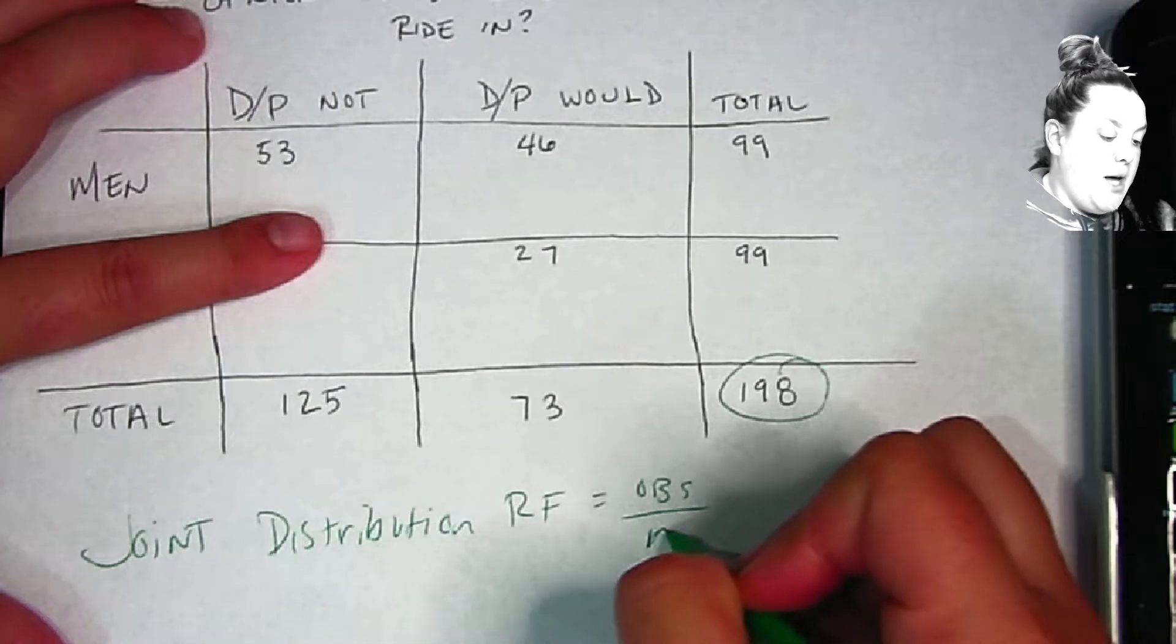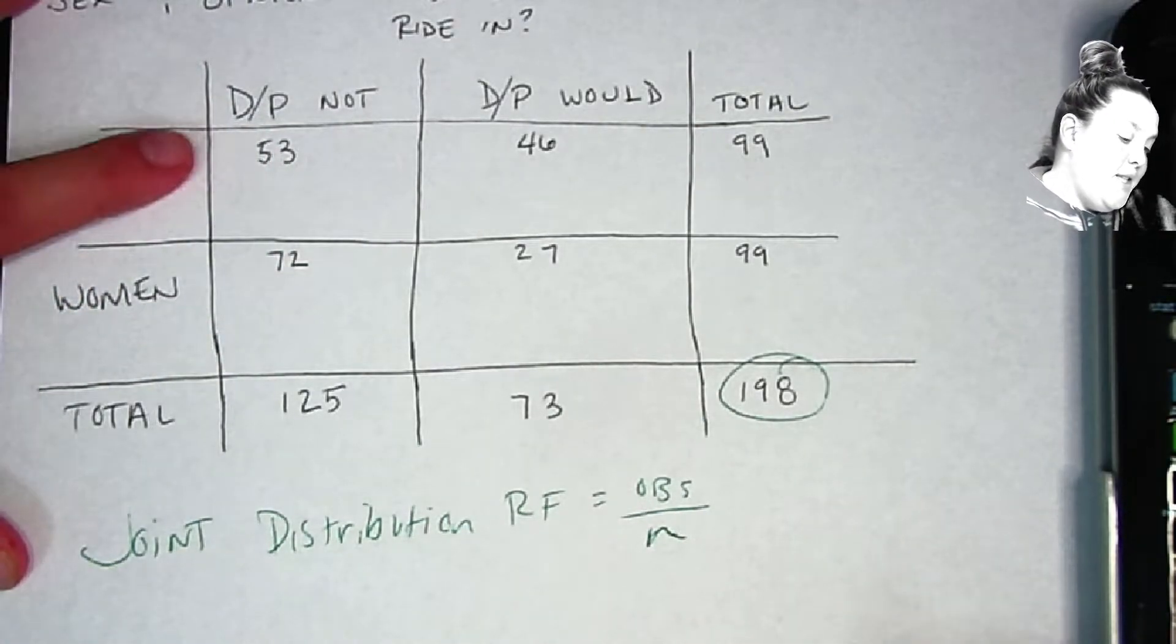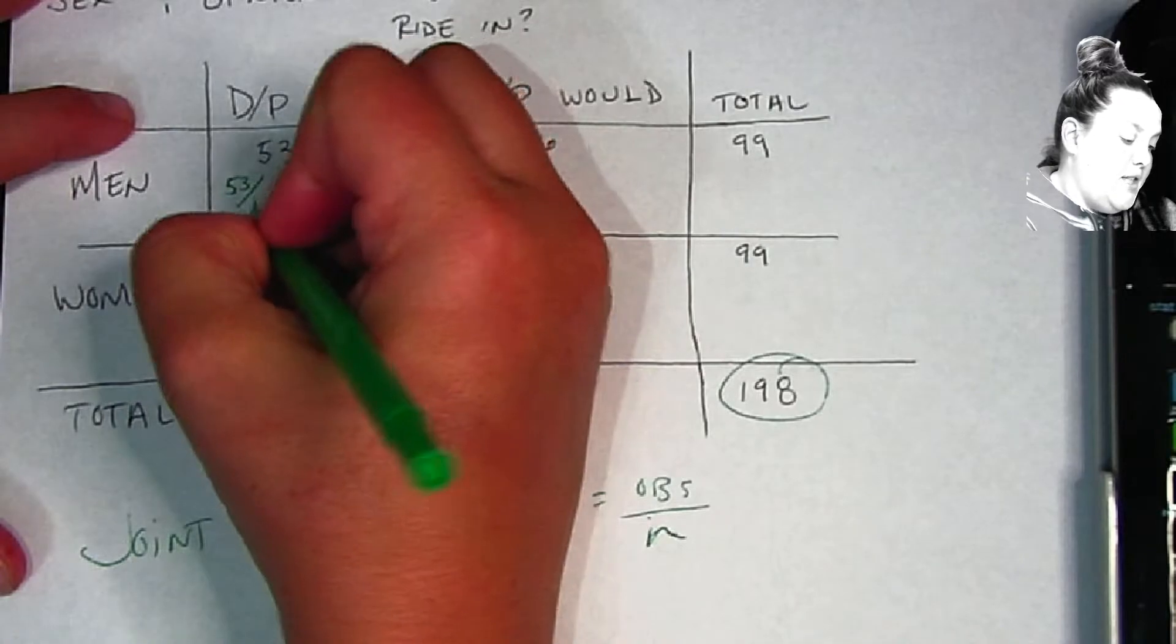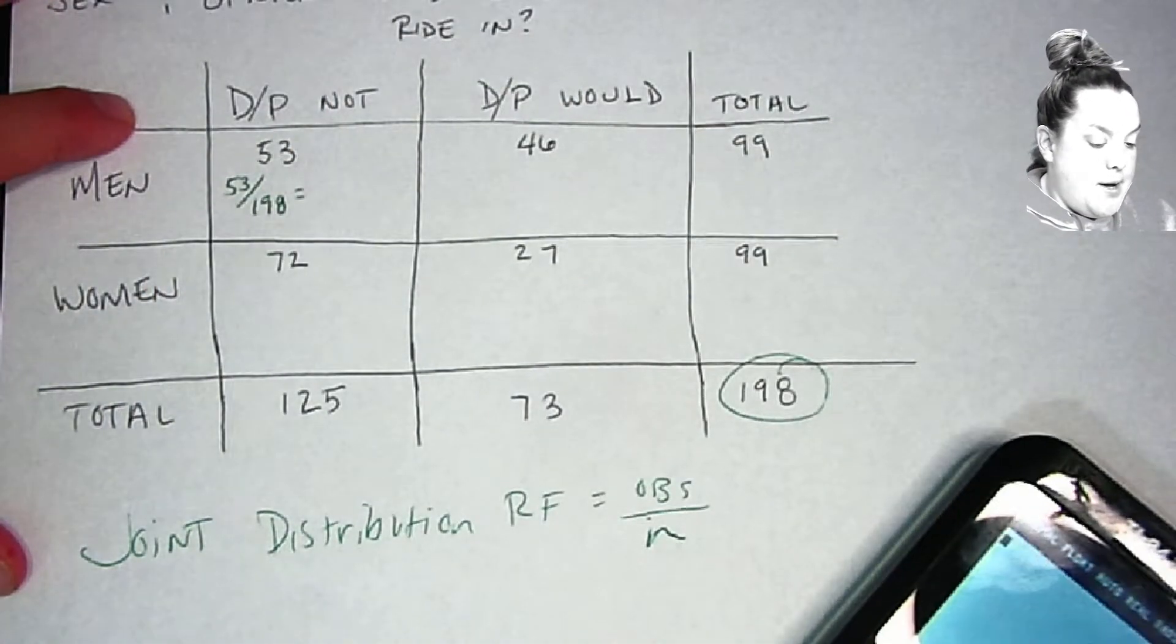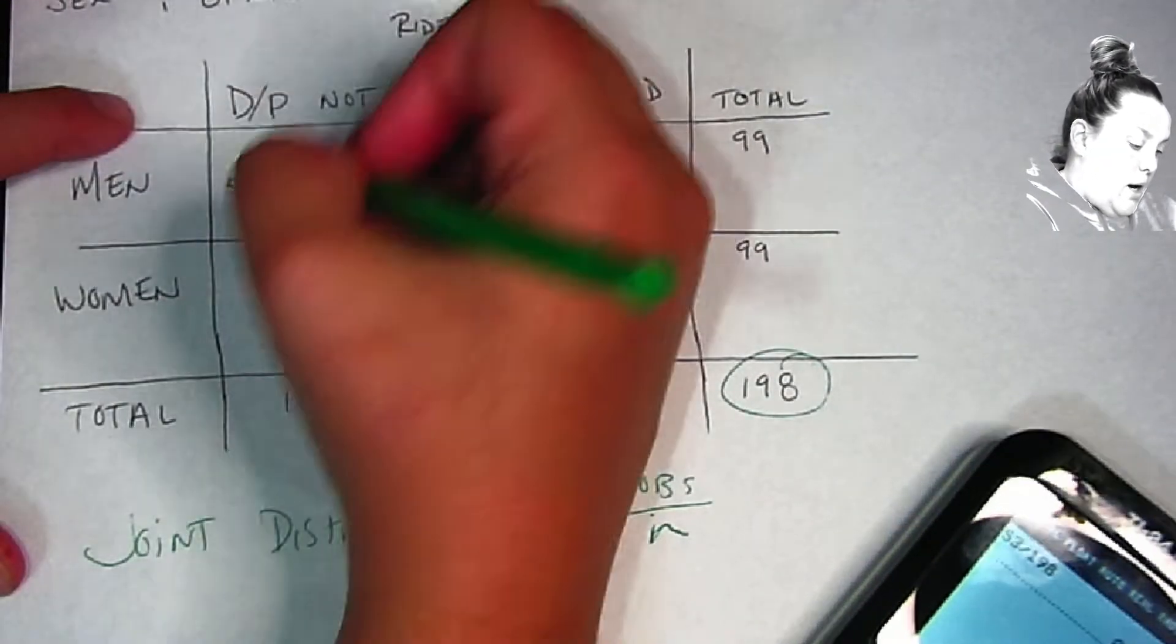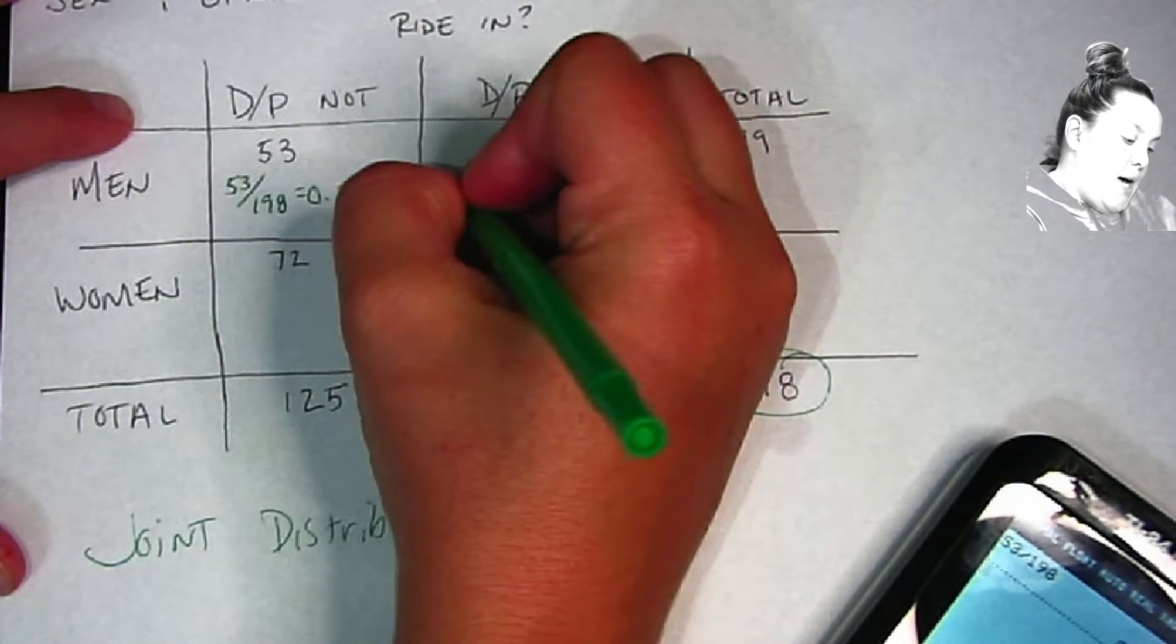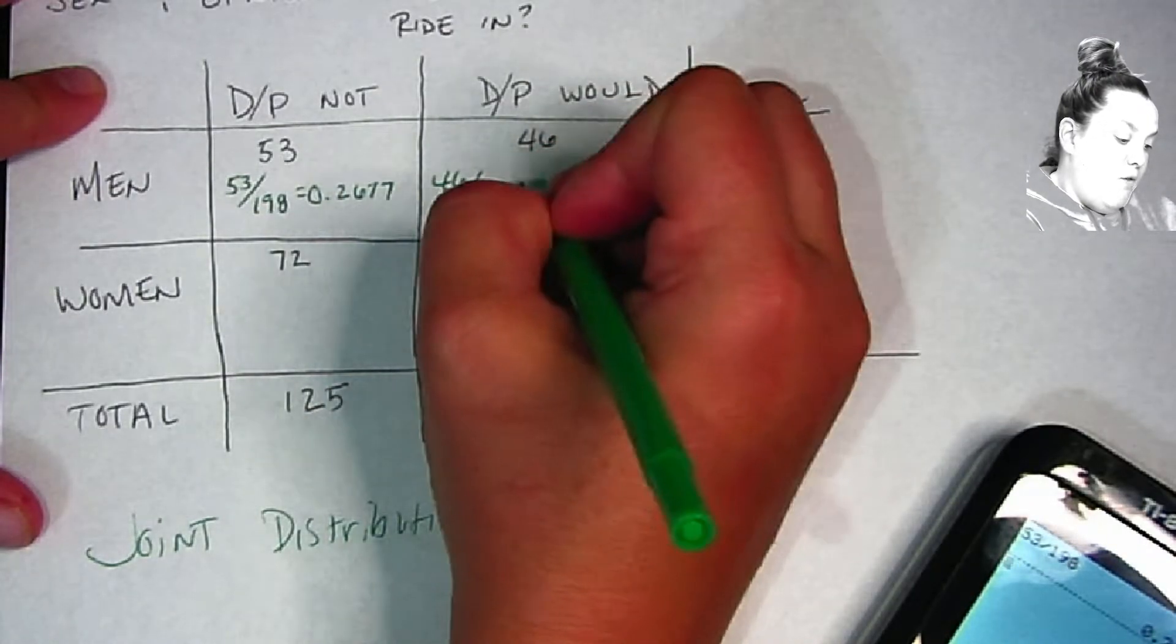That means that my observed count for men and definitely or probably would not is 53, and then I would divide that by the 198, and that gives me 0.267. And let's round correctly. Then we'll move to the men who would, so 46 divided by the 198, and that gives us 0.2323.